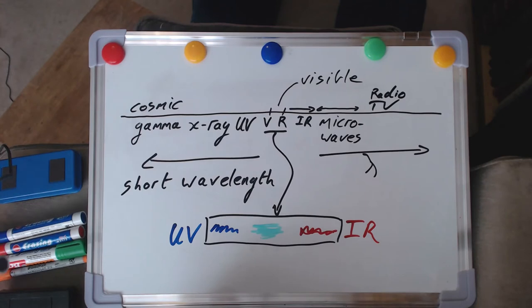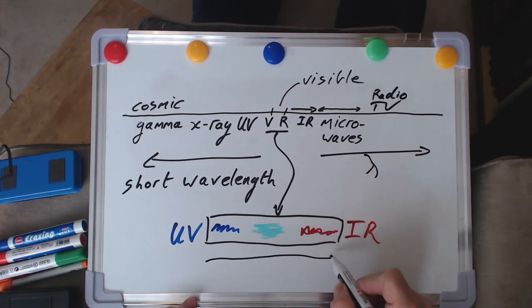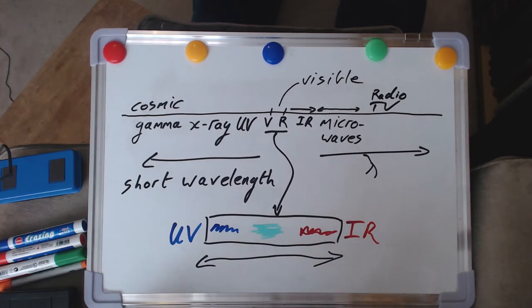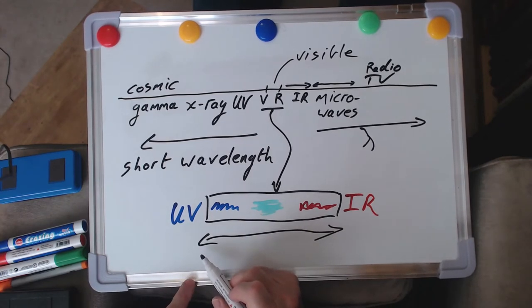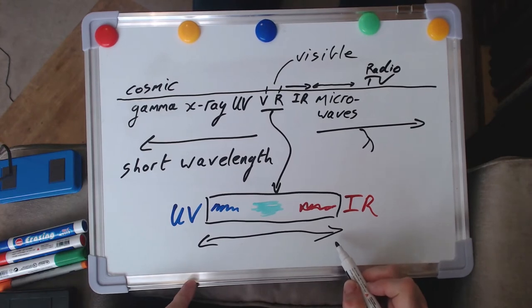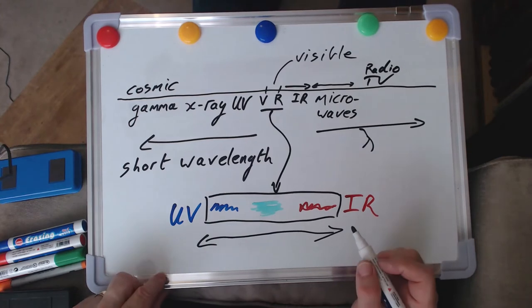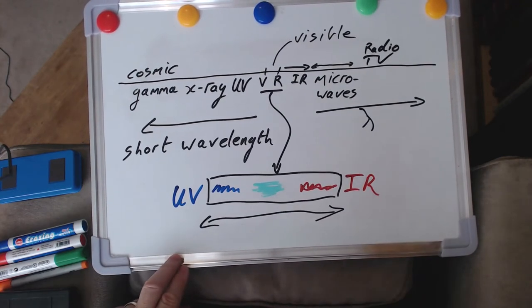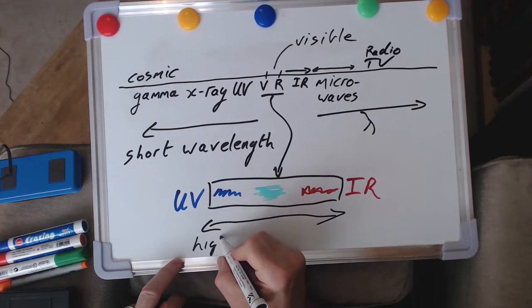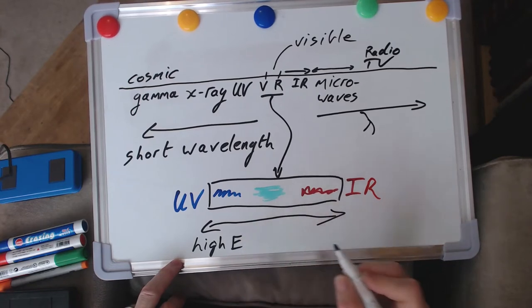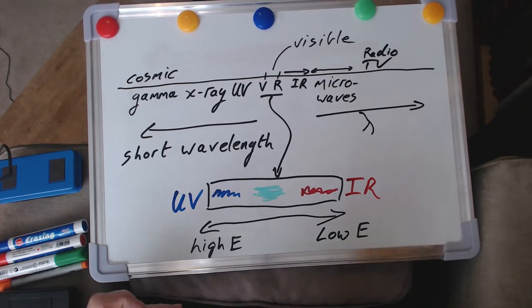But for today, I really just want to focus on this visible range in the middle. And it goes from the violet end, which is our shorter wavelength part of visible light, all the way up to red, which is the longer wavelength end. And the converse of that is to look at these things in terms of energy. And the energy of blue light is the highest. So this is our high energy end, and the red then will be our low energy end.